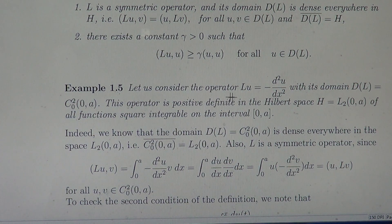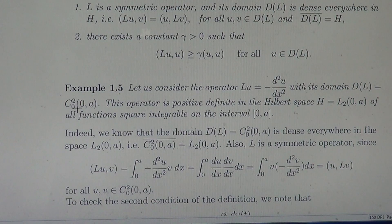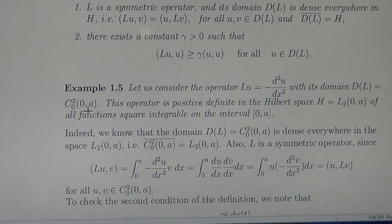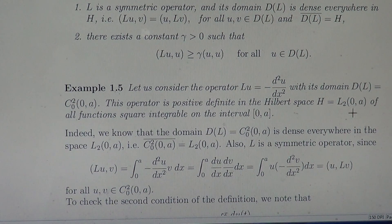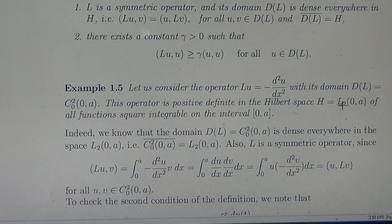Let us consider the operator minus the second derivative. The domain D(L) of this operator is the class of functions twice continuously differentiable on the interval [0, A] which vanish at the ends of the interval. The operator is positive definite in the Hilbert space H equals L2 of all functions integrable with square on the interval [0, A], which is a well-known space in functional analysis.